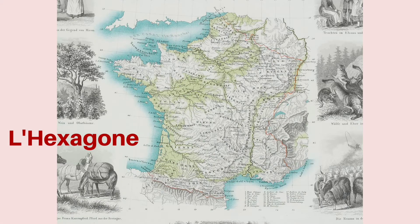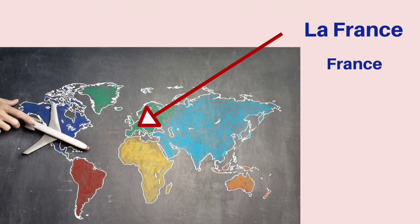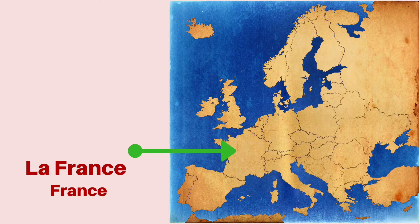France as a country is also known as l'hexagone. Why? Because of its shape, as you can see on the map of France. This is where la France is situated on the world map, and this is where you will find France on the map of Europe.